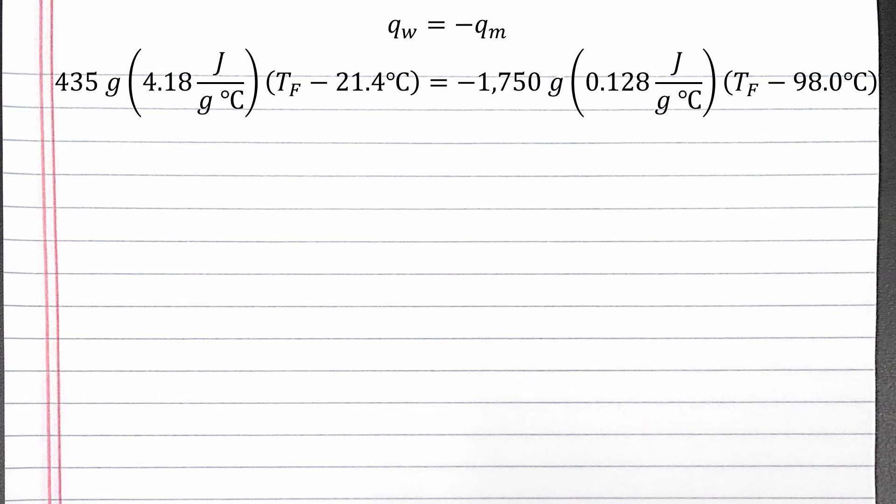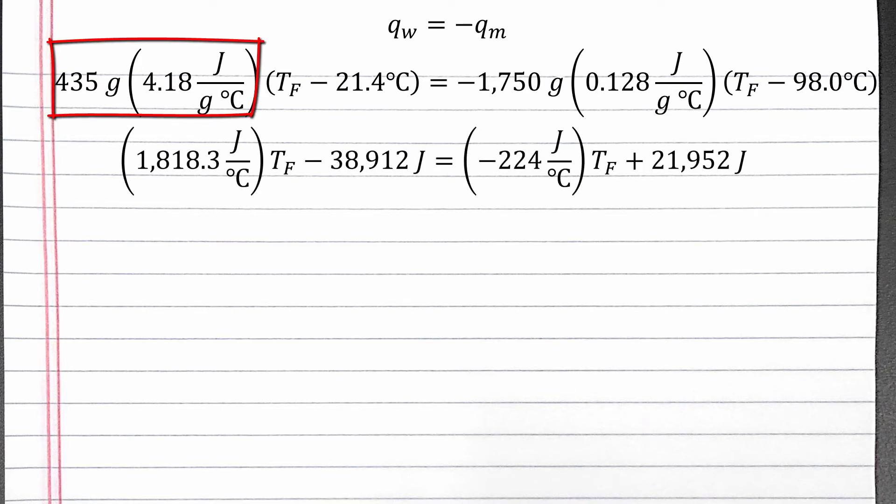We're multiplying what's outside the parentheses times T final and times the initial temperature. On the left, 435 grams times 4.18 joules per gram degrees Celsius times T final is 1,818.3 joules per degree Celsius T final. 435 grams times 4.18 joules per gram degrees Celsius times negative 21.4 degrees Celsius is negative 38,912 joules.